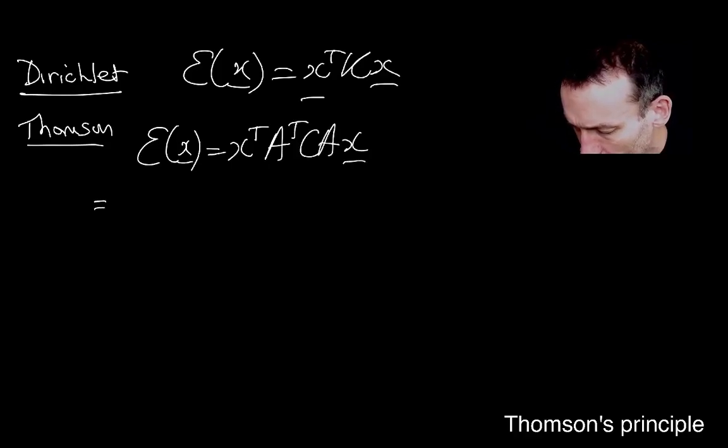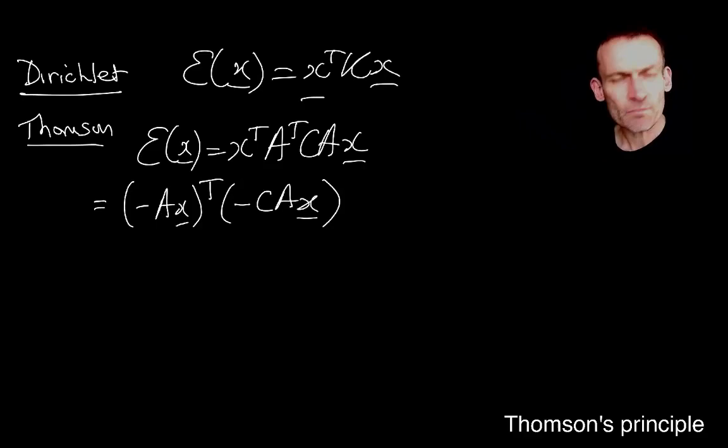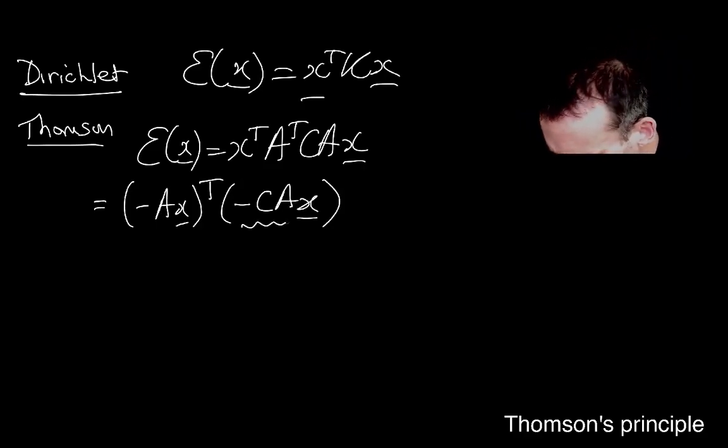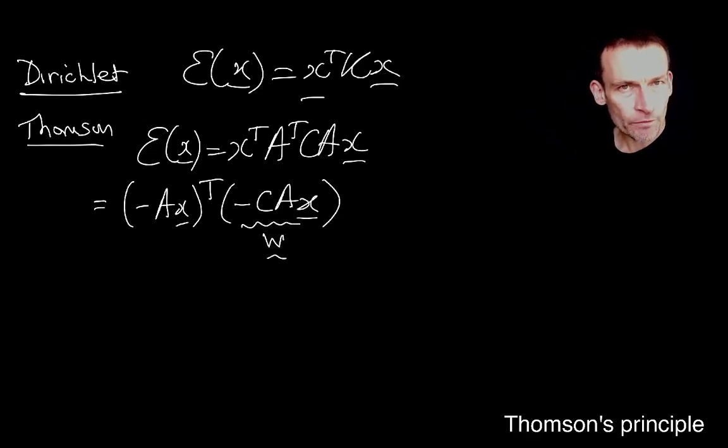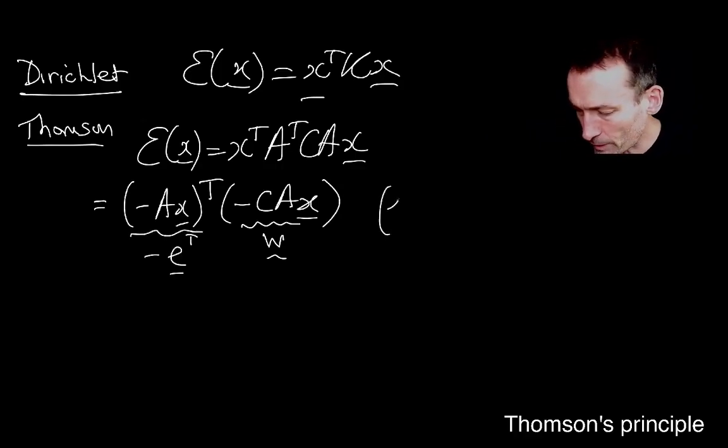And then if I'm just careful about this, I can write this as minus A x transposed times minus C A x. And if you remember, this from Ohm's law is what I called my m-dimensional vector of currents in the edges. And this thing here is actually minus E transpose where E was the vector of potential differences.